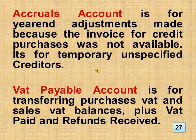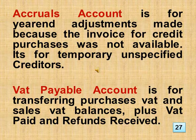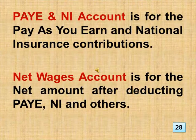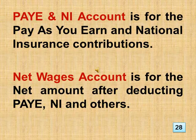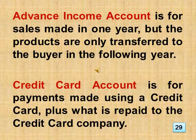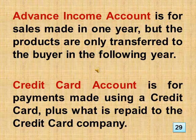Accruals account is for year-end adjustments made because the invoice for credit purchases was not available — it's for temporary and specified creditors. VAT Payable account is for transferring purchases VAT and sales VAT balances, plus VAT paid and refunds received. Pay and NI account is for pay-as-you-earn and national insurance contributions. Net Wages account is for the net amount after deducting pay, NI and others. Advance Income account is for sales made in one year but where products are only transferred to the buyer in the following year.